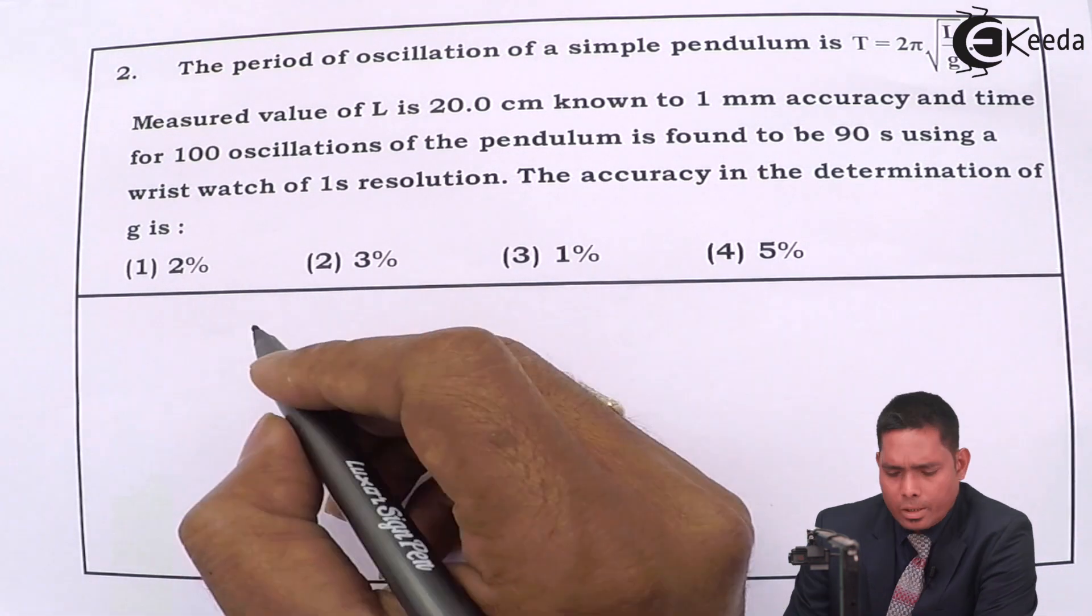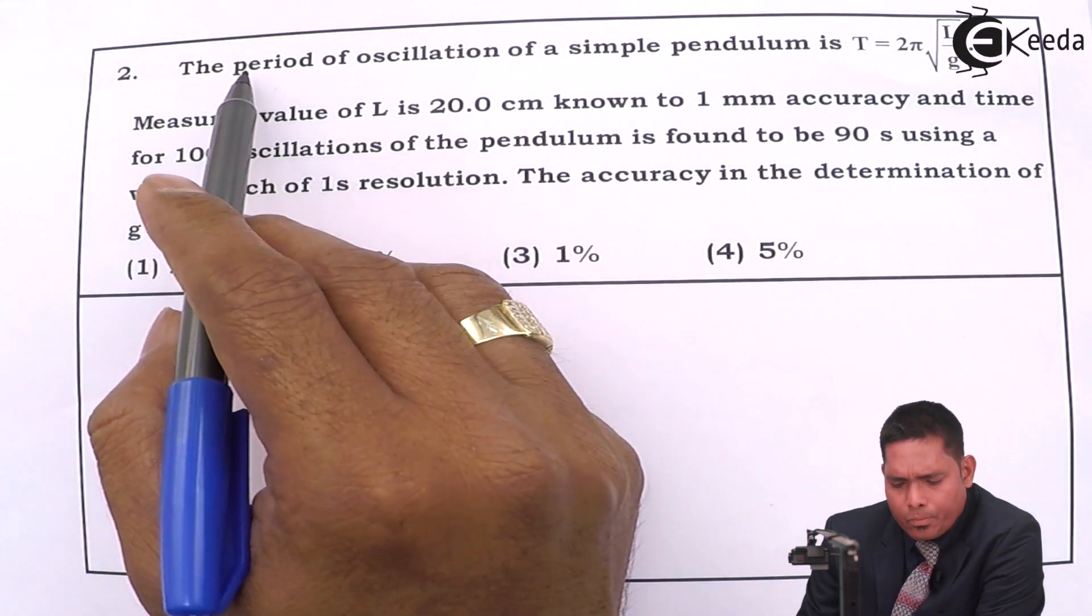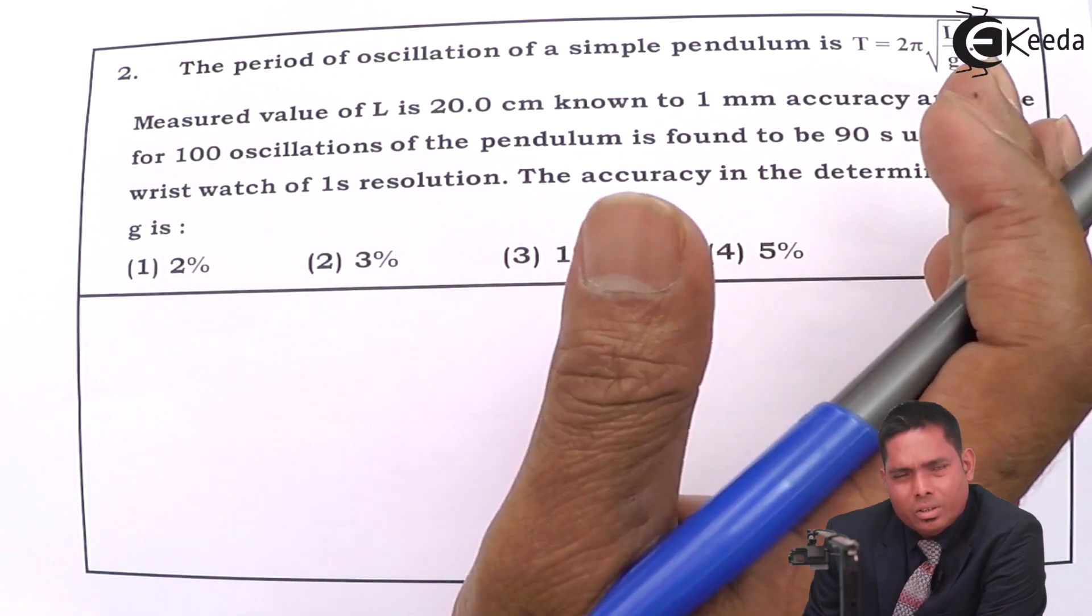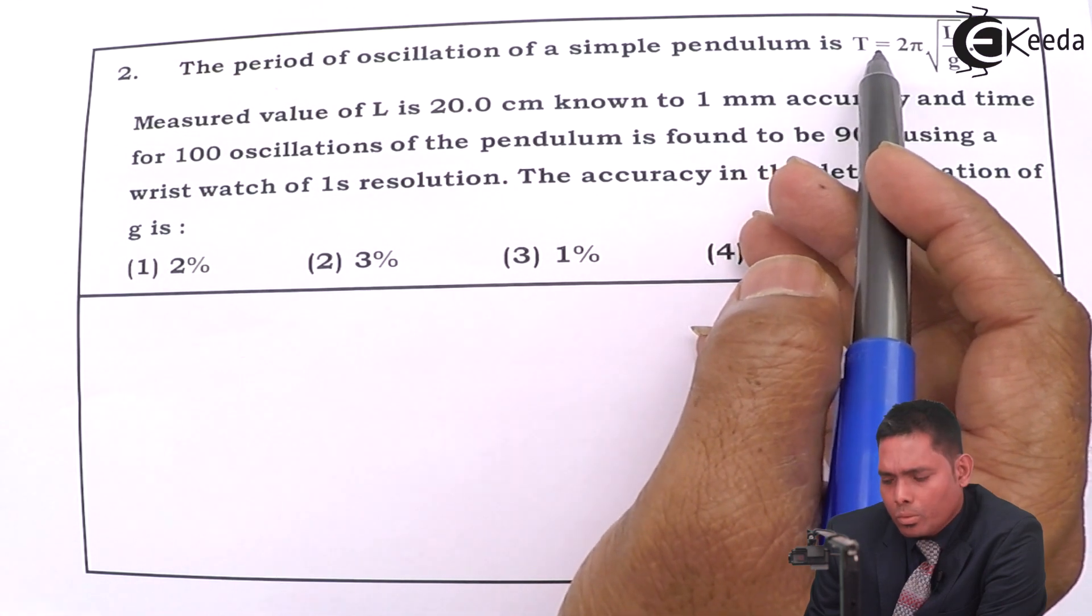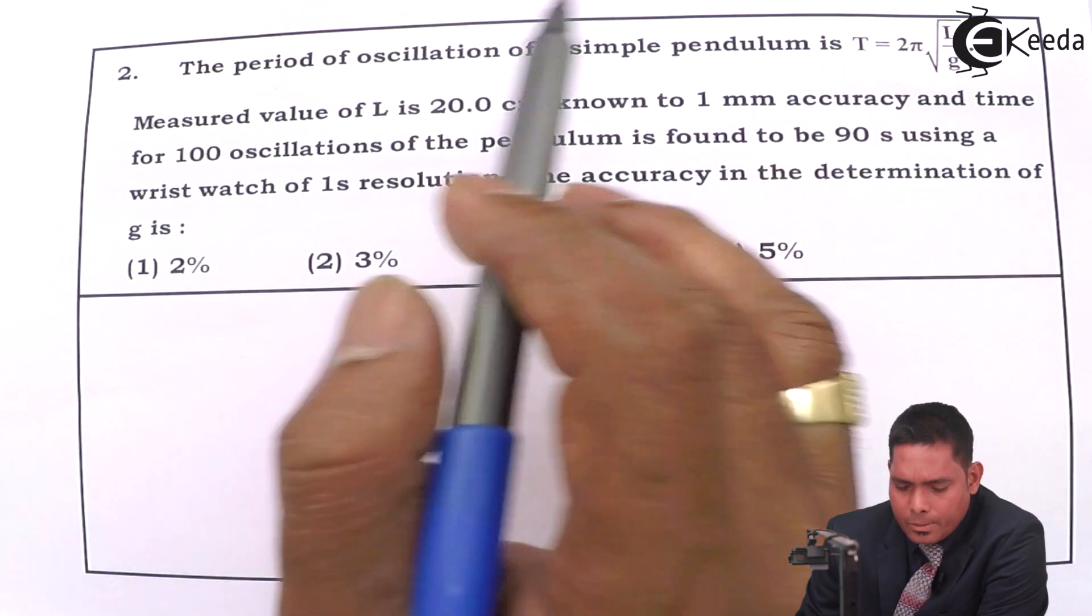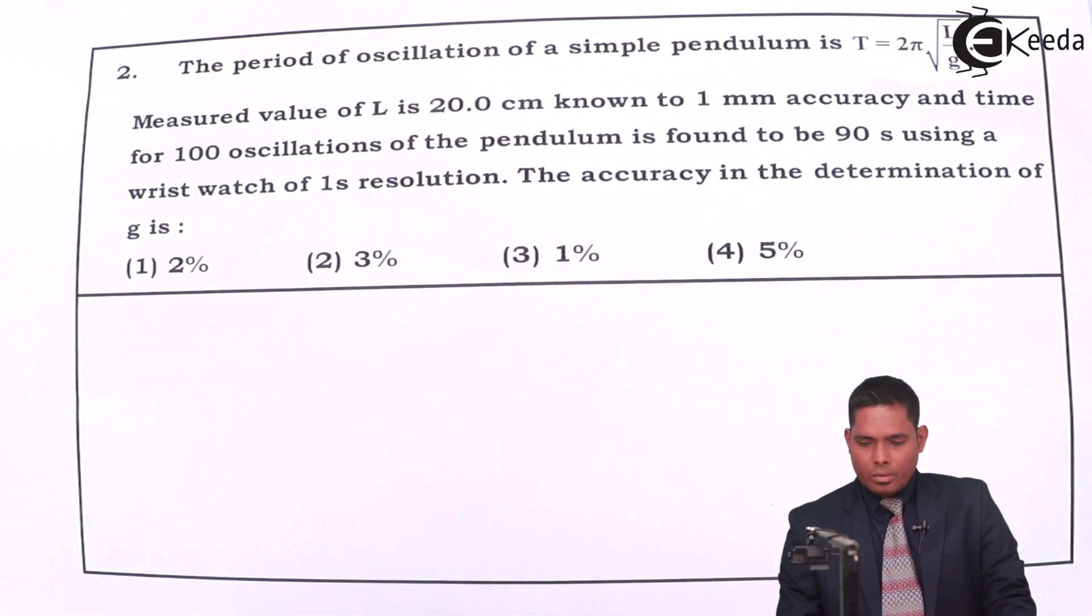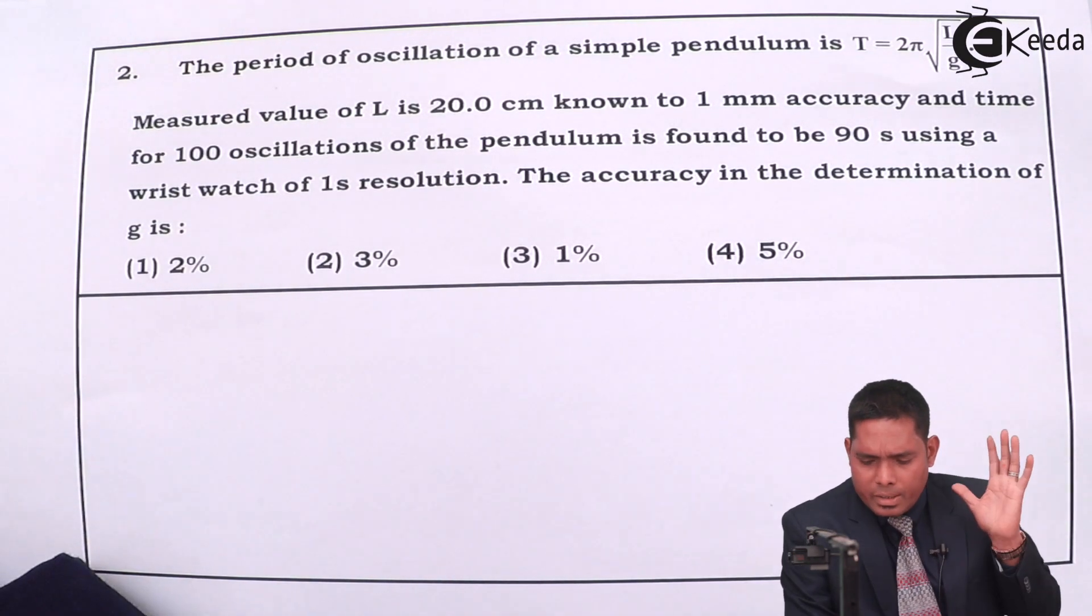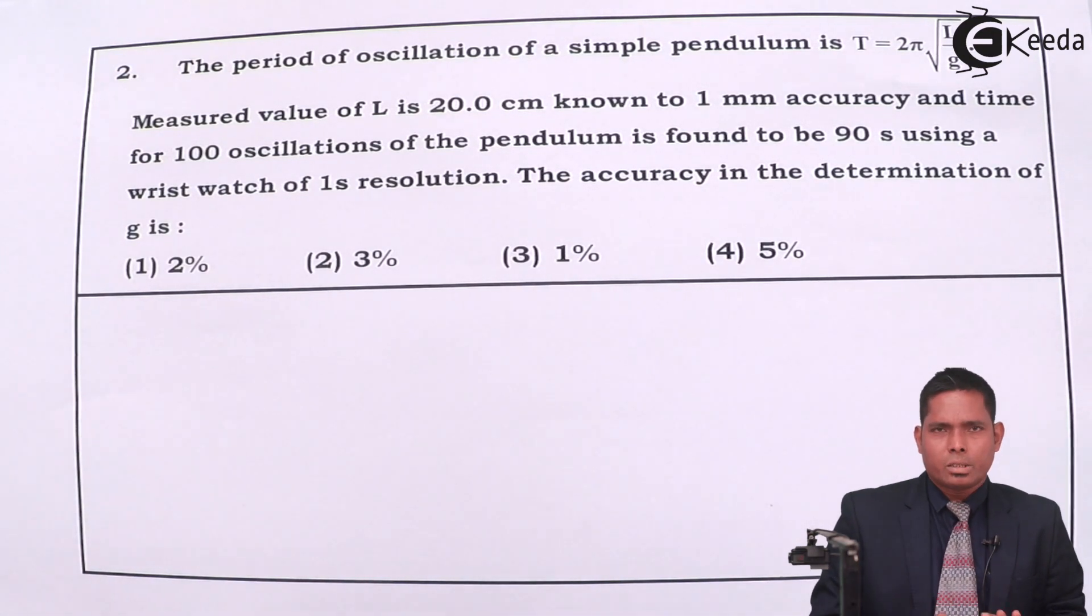Let us move to the second question. The period of oscillation of a simple pendulum is—you know there is a general formula for the time period of a simple pendulum T equals 2π√(l/g). The measured value of L is 20 centimeters, so the length of the string is measured to be 20 centimeters.